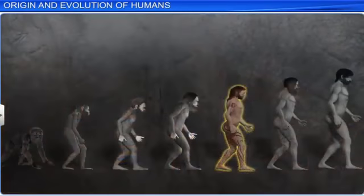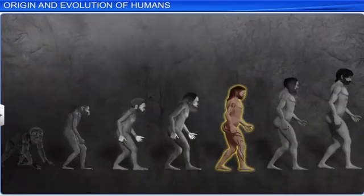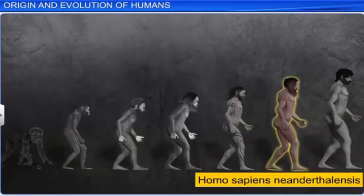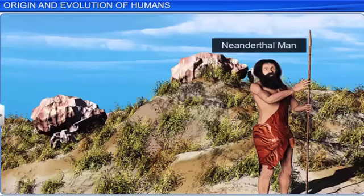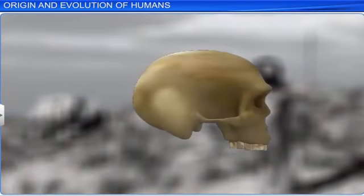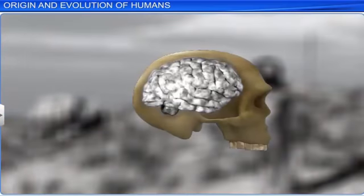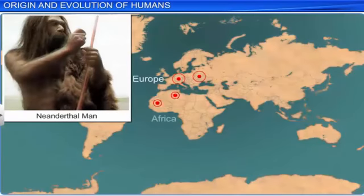After Homo erectus, there were several stages that led to the evolution of Homo sapiens. Fossil evidence suggests that between 1 lakh to 40,000 years ago, Homo sapiens Neanderthalensis, or Neanderthal man, with a brain size of 1400 cubic centimeters, lived in Europe, northern Africa, and eastern and central Asia.